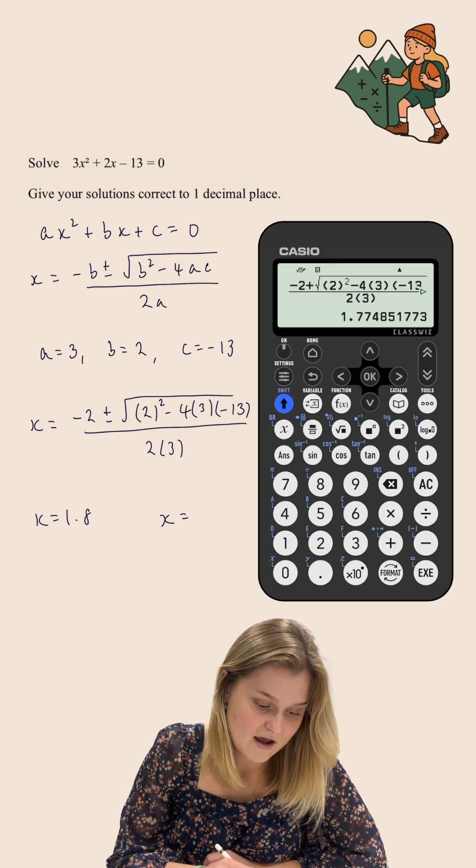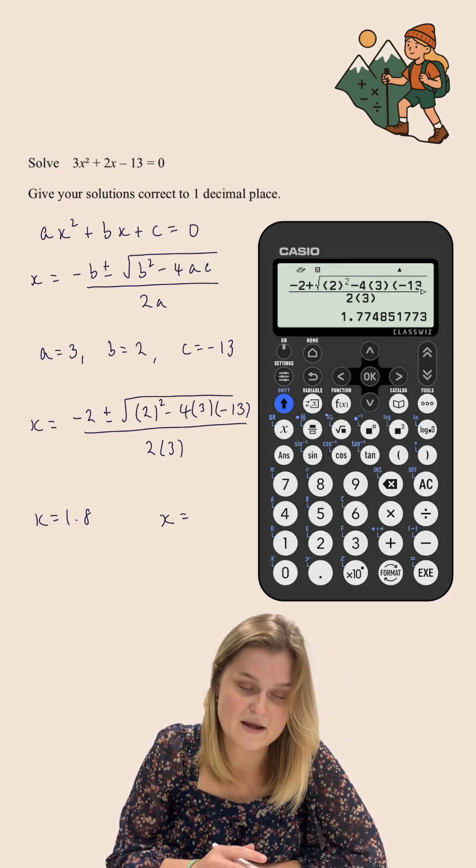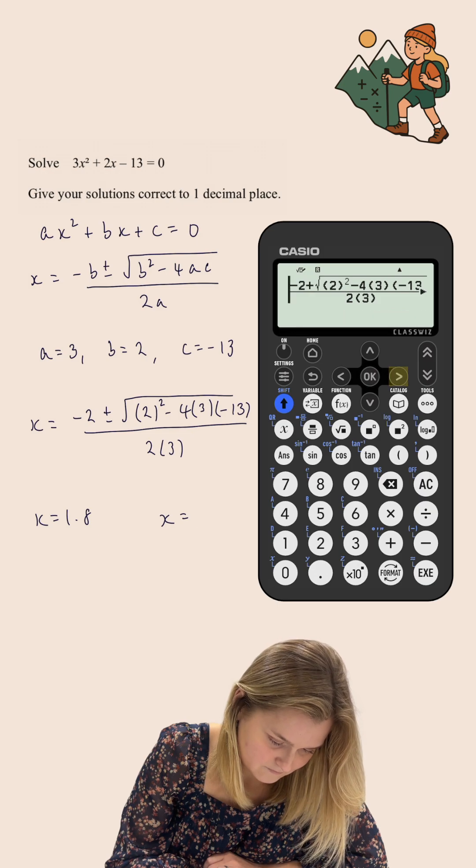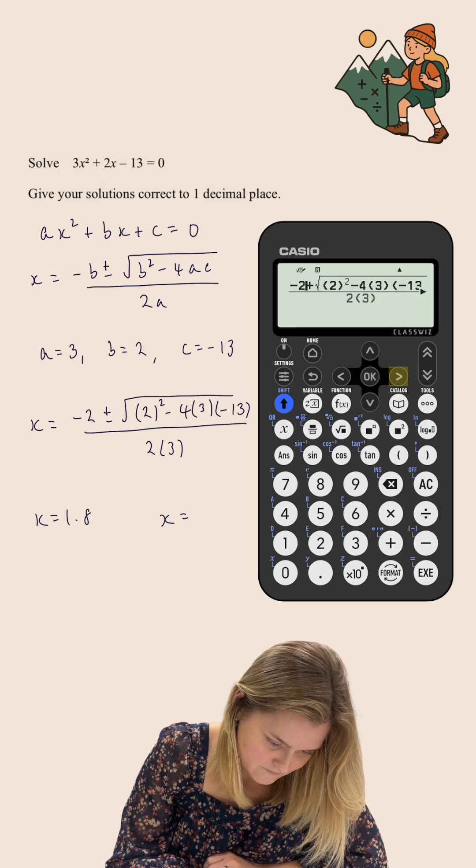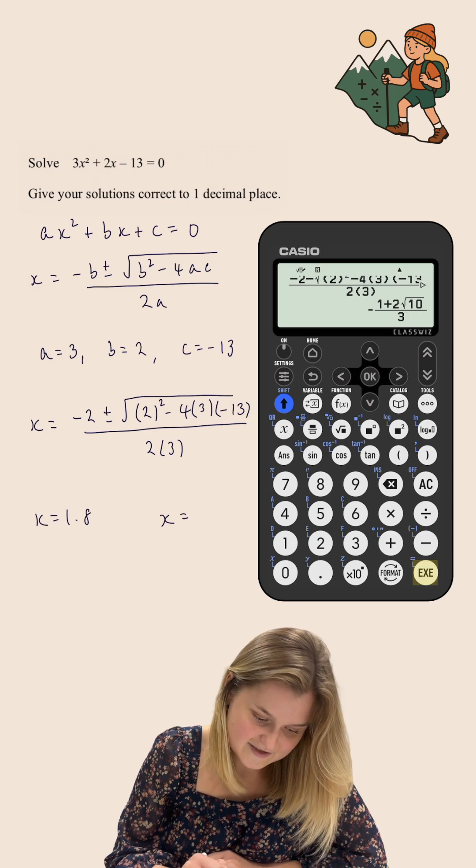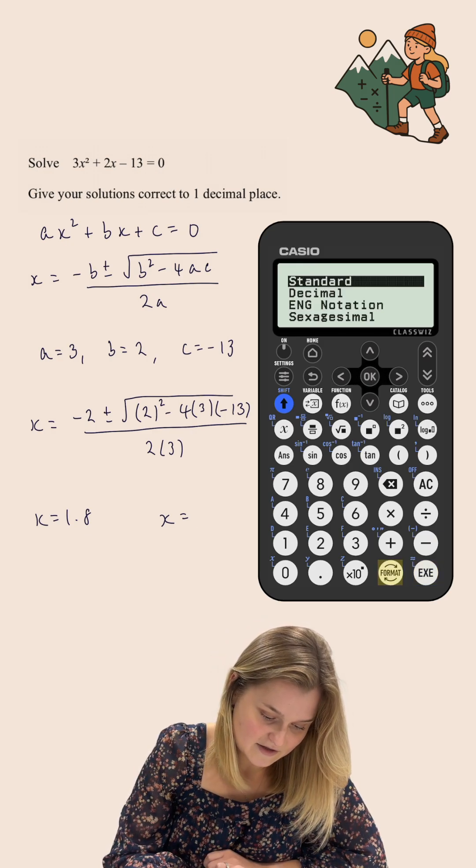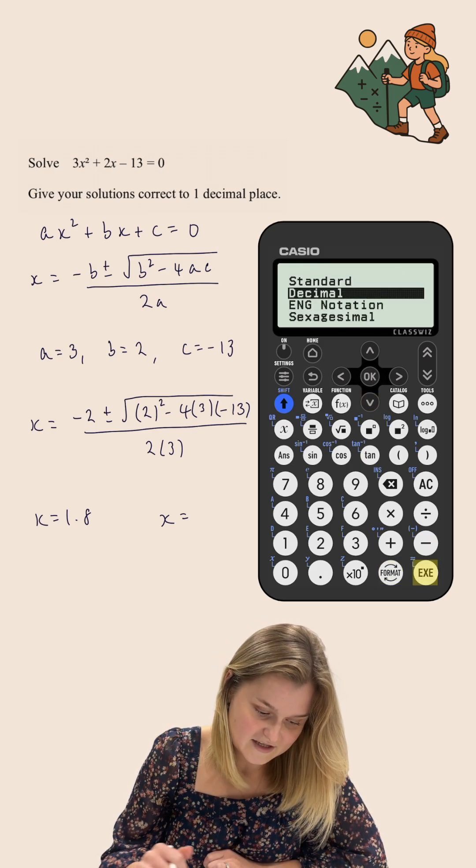I'm just going to change the plus to a minus at the beginning. So changing that to a minus, executing again, and then using the format button and changing this to a decimal,